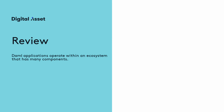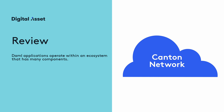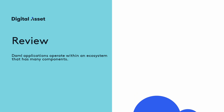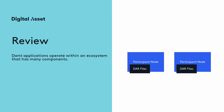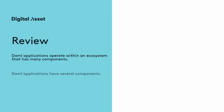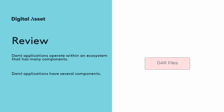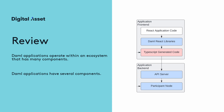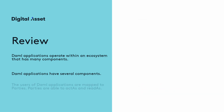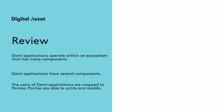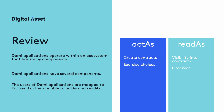So let's review what we've covered. DAML applications operate within an ecosystem that has many components. The Canton network is the foundation where the infrastructure nodes provide a persistent layer for the Canton ledger. Participant nodes expose the DAML ledger API, which is accessed by DAML applications. DAML applications have several components — the user interface could be built with any framework, but DAML provides React libraries. The DAML code is primarily for the backend and is compiled into DAR files. The participant nodes provide access to the DAML ledger through the ledger API served by an API server. The users of DAML applications are mapped to parties. The act as clause allows them to perform actions such as create contracts and exercise choices. The read as clause allows users to view the contracts.